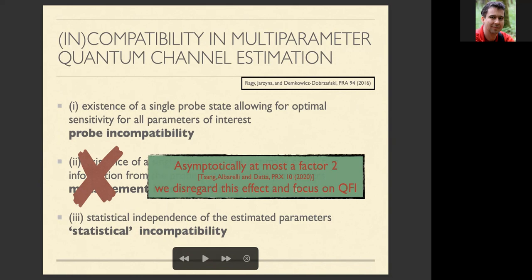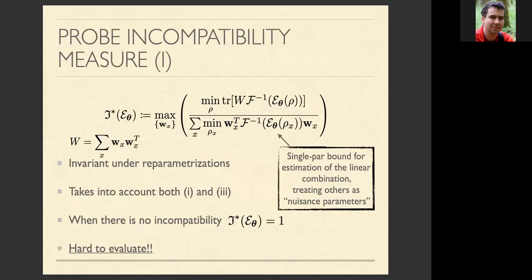We disregard measurement incompatibility because asymptotically it contributes at most a factor of two, and use this as a reason to focus on the QFI. The first thing we present is a measure for probing compatibility: in the denominator we have the cost for multi-parameter estimation with a single probe state in terms of the inverse quantum Fisher information matrix, while in the numerator we have the sum of single-parameter bounds for linear combinations of parameters determined by vectors w_x.